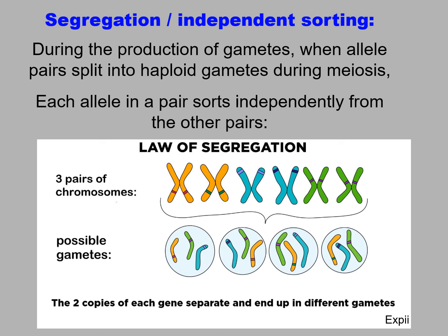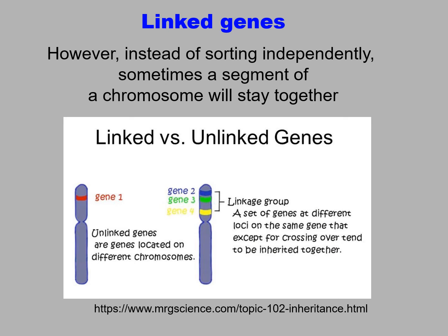Let's review what is segregation. During the production of gametes, when allele pairs split into the haploid gametes during meiosis, each allele in a pair sorts independently from the other pairs. In linked genes, however, instead of sorting independently, sometimes a segment of a chromosome will stay together.